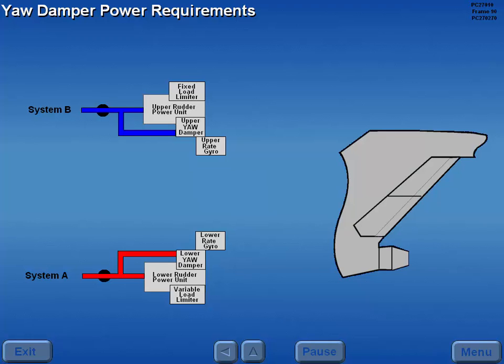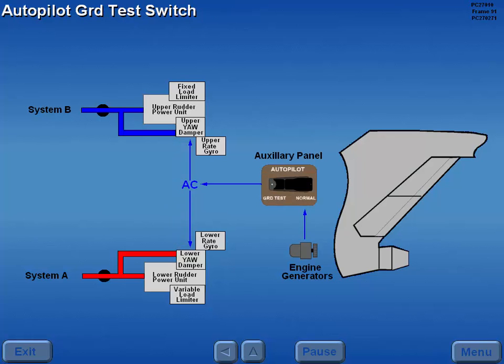Each yaw damper requires both AC and DC power. Normally, the yaw dampers receive AC power from the engine driven generators.